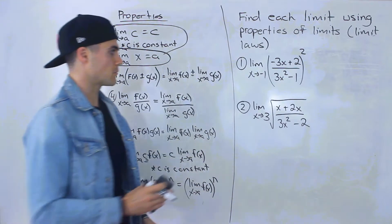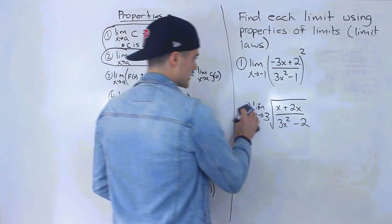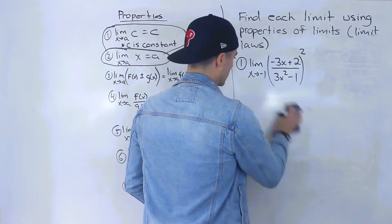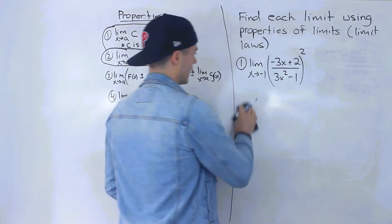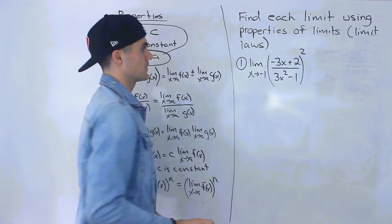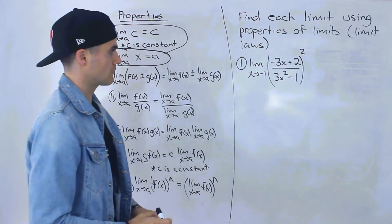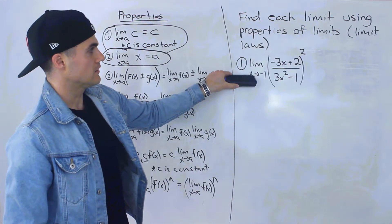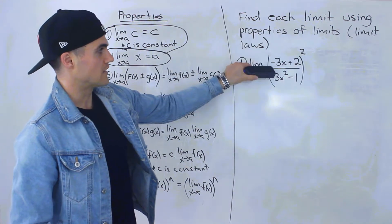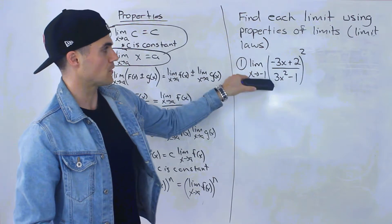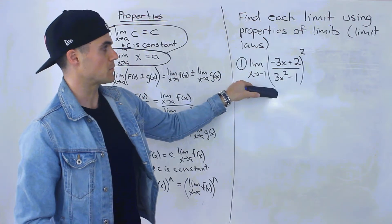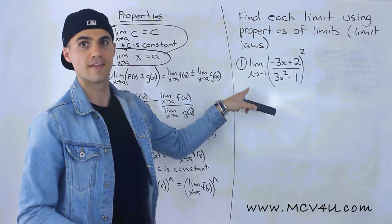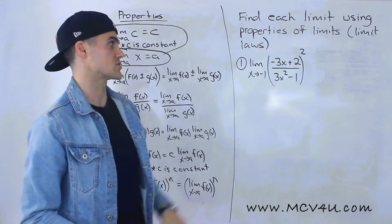Starting with number one, we've got the limit as x approaches negative one of negative three x plus two, all over three x squared minus one, and then that's all being squared.